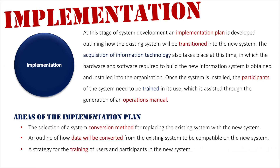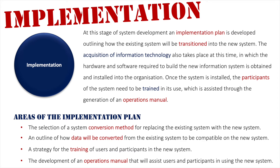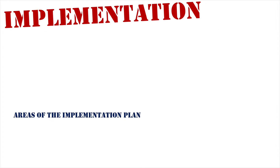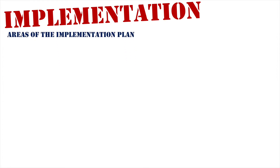Thirdly is a strategy for the training of the users and participants — essentially how they're going to know how to use the new system. And finally, the development of an operations manual that will assist the users and participants in using the new system. Let's go into a bit more detail on these. Firstly, we are going to look at the conversion methods.